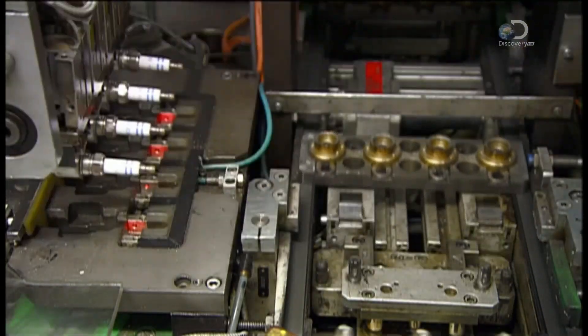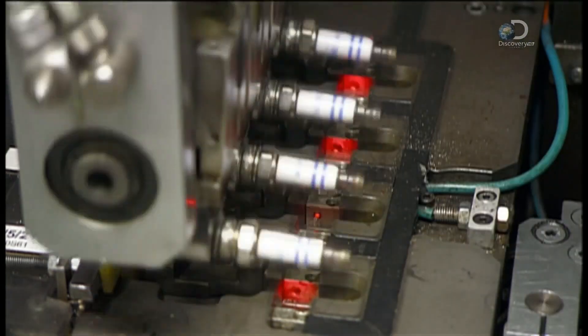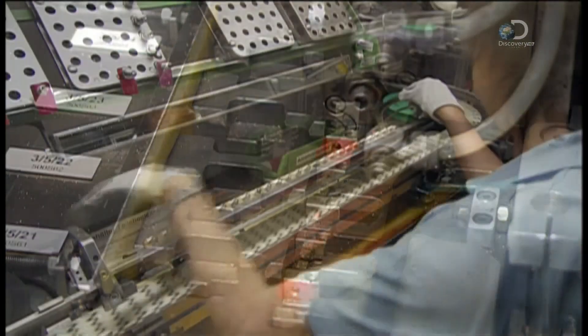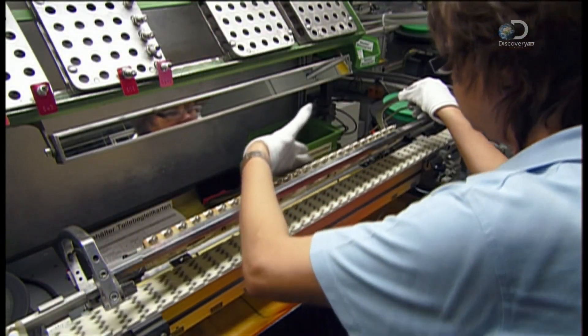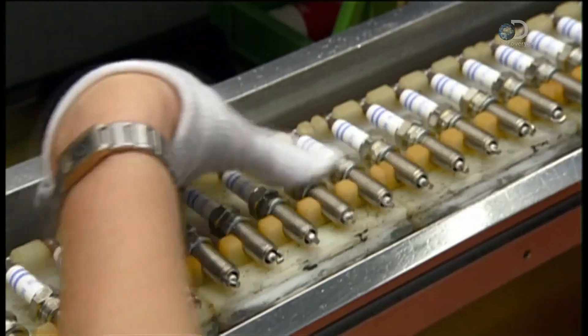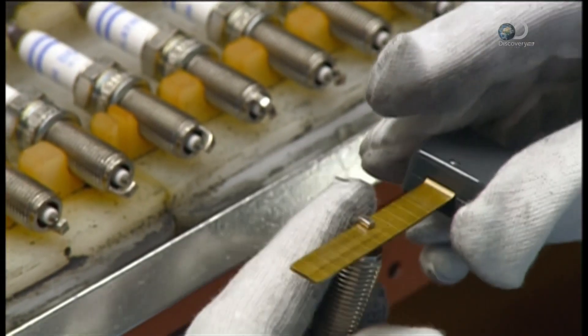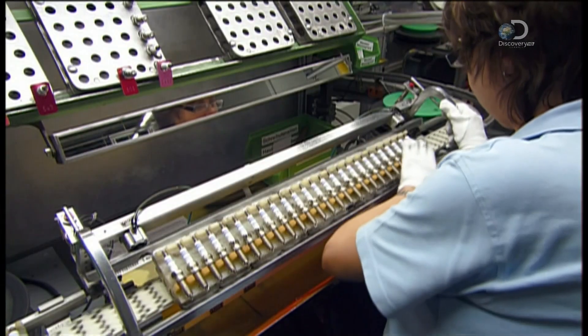The robot then collects the spark plugs and sends them down the line. It's time for an inspection. She looks for imperfections in the glaze, the inscription, and the nickel plating. She measures the space between the two electrodes before sending them over to the packaging department.